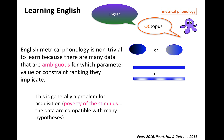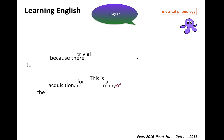English Metrical Phonology is hard — it's non-trivial to learn. First of all, there are many data points that are ambiguous for which parameter value or constraint ranking they implicate. This is a normal problem for language acquisition; we call it poverty of the stimulus when the data are compatible with many alternative hypotheses. We have parameters whose values must be set, or constraints where we want to decide which is more important in the language — that's a normal problem.